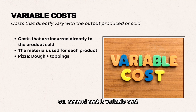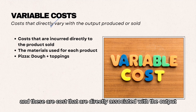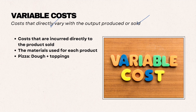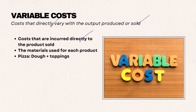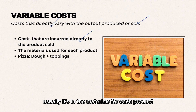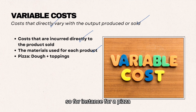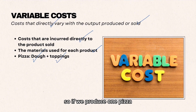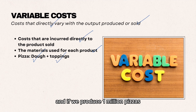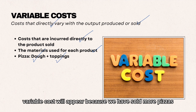Our second cost is variable costs, and these are costs that are directly associated with the output produced or sold — costs incurred directly to the product sold, usually in the materials for each product. For instance, for a pizza, every pizza requires dough and toppings. So if we produce one pizza, a small amount will be spent, and if we produce a million pizzas, a much larger variable cost will appear.